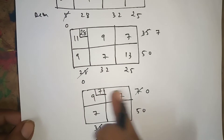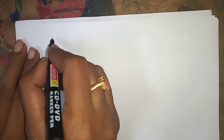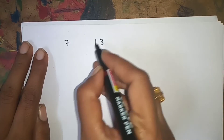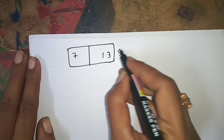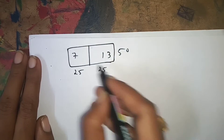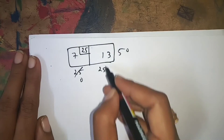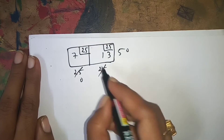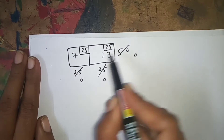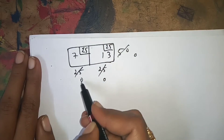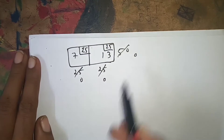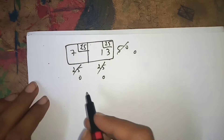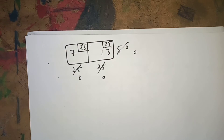Wherever you get 0, omit that particular row or column. Now the remaining supply is 50 and the two remaining demands are 25 and 25. We use 25 here — demand becomes 0. Then we use the remaining 25 — supply becomes 0. So 25 plus 25 equals 50, all used up.